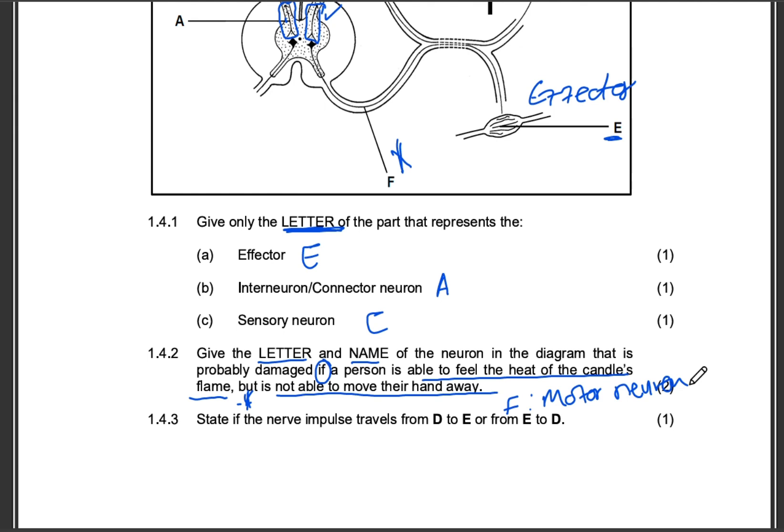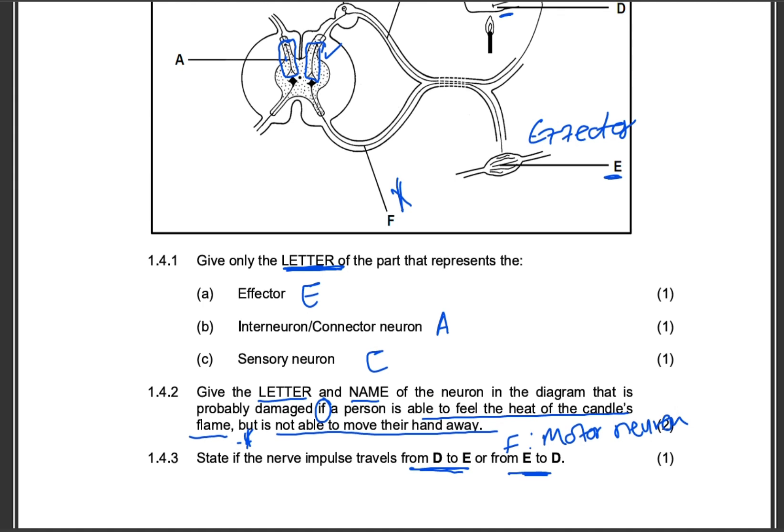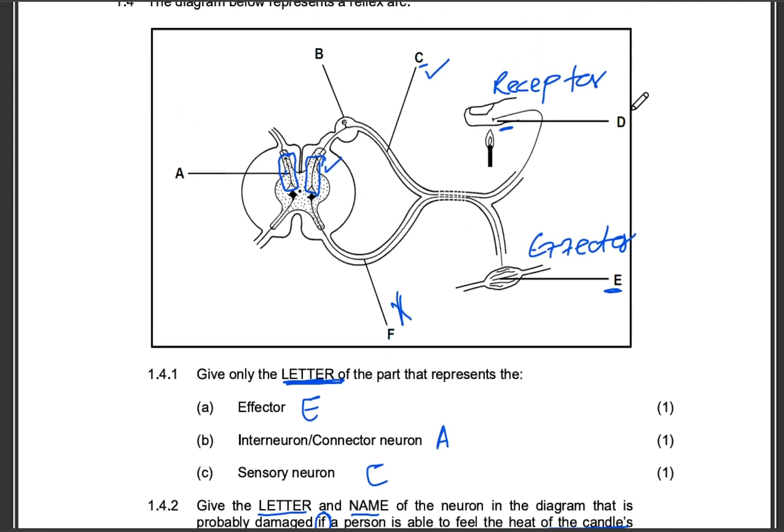State if the nerve impulse travels from D to E or from E to D. Let us see. State if the nerve impulse travels from D to E or E to D, definitely D to E.